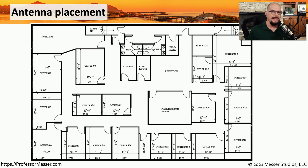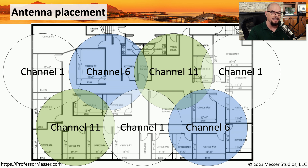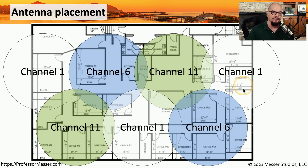We also might want to place antennas so that they're not interfering with other frequencies in use. On a 2.4 gigahertz network, which has a limited number of non-overlapping channels, we know that we can only put traffic on channels 1, 6, and 11. So if we wanted to put a series of access points into a building, we'd place the antennas so they're not overlapping between channels 1, 6, and 11. As shown in this diagram, we've been able to separate all of these channels to achieve the best coverage and the least interference.